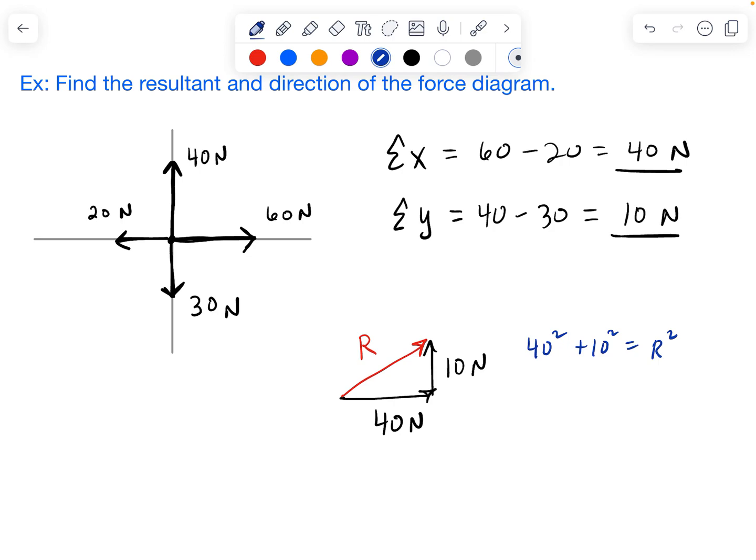I'm just going to get my calculator out and do that off screen. So 40 squared plus 10 squared gives me 1,700. And then we need a square root. So we get 41.2 newtons.